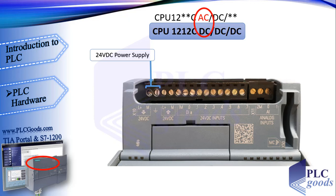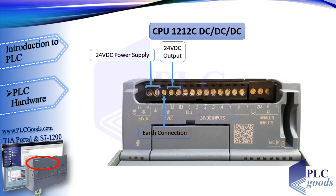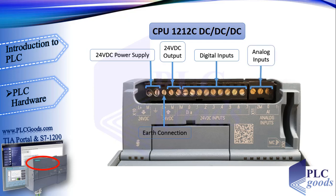For safety, the next terminal connects the PLC body to earth. This CPU also provides a 24-volt DC output to supply sensors or other instruments connected to it. Next are the digital inputs — a digital input has only two states: on or off. The first terminal is common for all eight digital inputs, which operate at 24 volts. The last three terminals are for analog inputs.